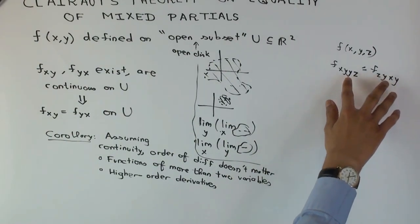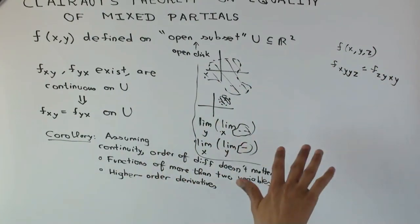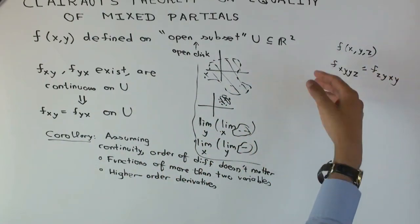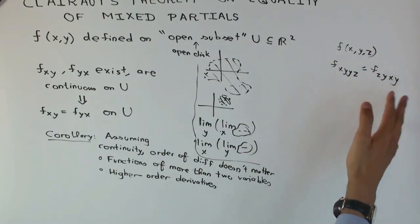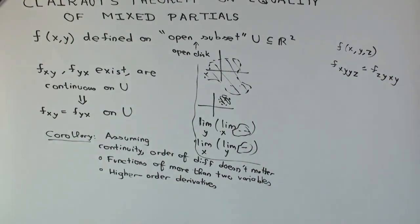The reason they're the same is the number of occurrences of each variable is the same. You have to make suitable continuity assumptions—a lot of them. I'm not putting them explicitly, but if you're working with polynomials and nice functions, those continuity assumptions apply. Another way to understand this result is to look at special cases of functions.